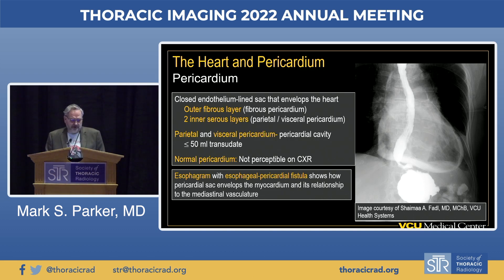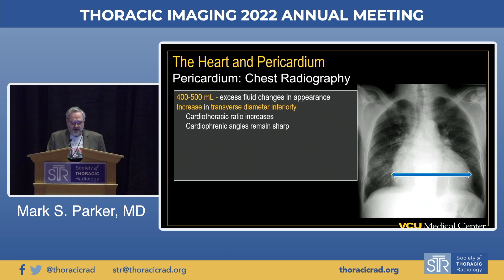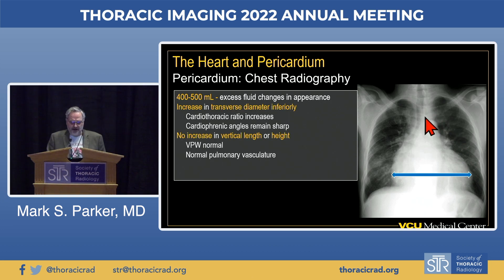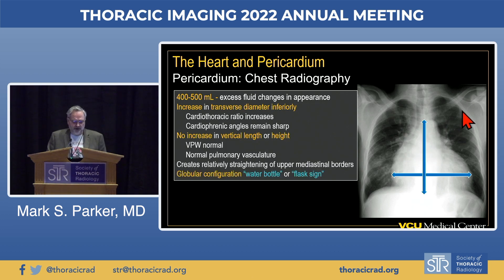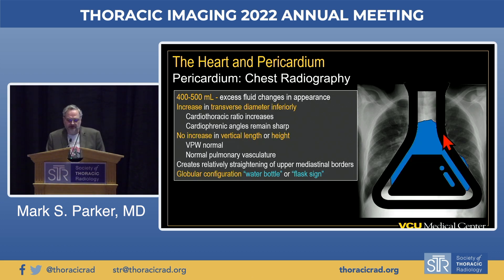On the frontal radiograph, it takes a fair amount of fluid—on the order of 400 to 500 milliliters—to start changing the cardiac silhouette. When it accumulates, we see initially an increase in the transverse diameter inferiorly with an increased cardiothoracic ratio, but the cardiophrenic angles remain sharp. There is no increase in vertical height, the vascular pedicle width is normal, and the vasculature is normal. This creates relative straightening of the upper border and bulging of the inferior border—referred to as a water bottle shaped heart, beaker sign, or Erlenmeyer flask sign.